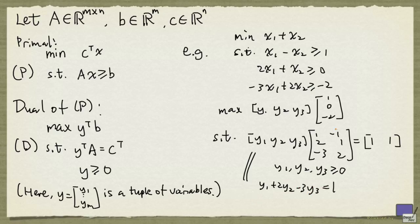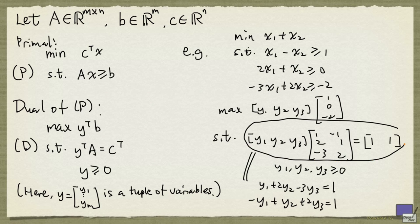And the second column will give us minus y1, plus y2, plus 2y3, equals 1. And so we can replace this with this. And that's what we'll do.